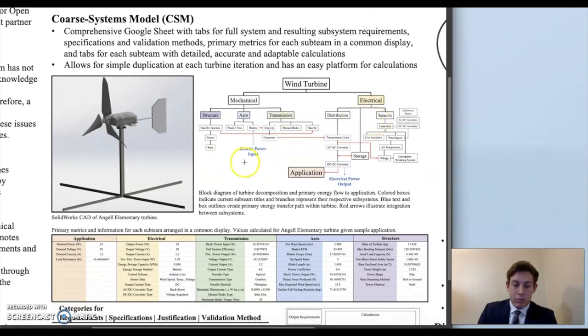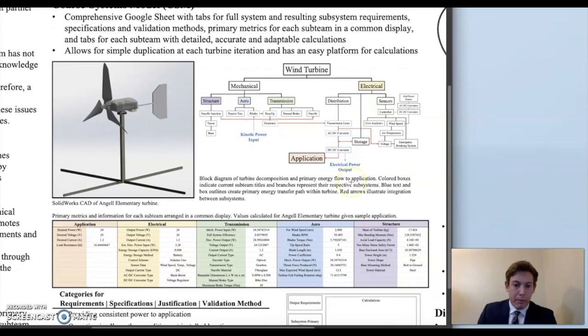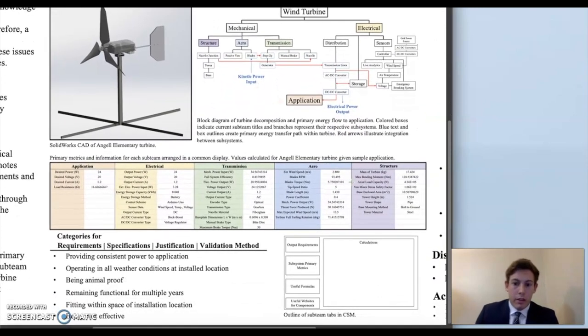The blue pathway outlines the general energy flow through the turbine. This is another tab on the coarse systems model displaying the primary metrics calculated for each subsystem. Each subsystem has a tab of their own, which I'll go over more later. But essentially these are the metrics that I deemed most important to be displayed all together in this common display.